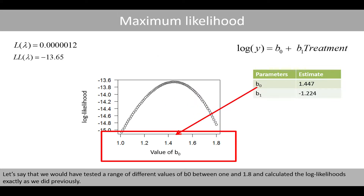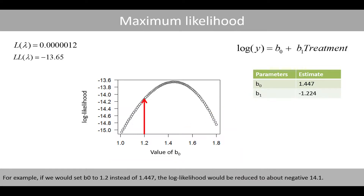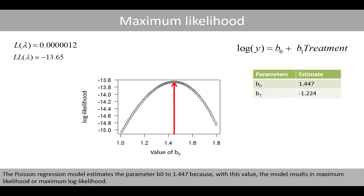These estimated values are the ones that result in the maximum likelihood or maximum log likelihood of the model. If we tested a range of different values between 1 and 1.8 and calculated the log likelihoods, for example if we set B0 to 1.2 instead of 1.447, the log likelihood would be reduced to about negative 14.1. The Poisson regression model estimates B0 to 1.447 because with this value the model results in maximum likelihood.